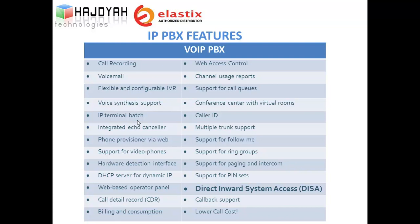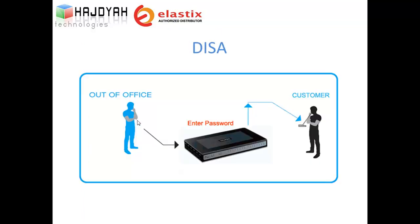Direct Inward System Access, DISA. This option allows an employee who is out of the office to call the office number, enter their password, and make a call using the office number. This is useful if you want to use the company's international line from outside the office, or if you want to use Voice over IP calls between branches.